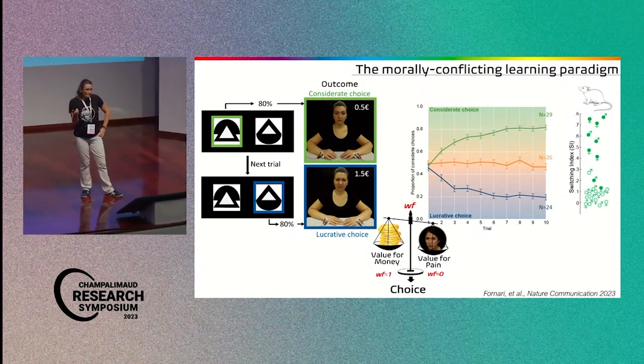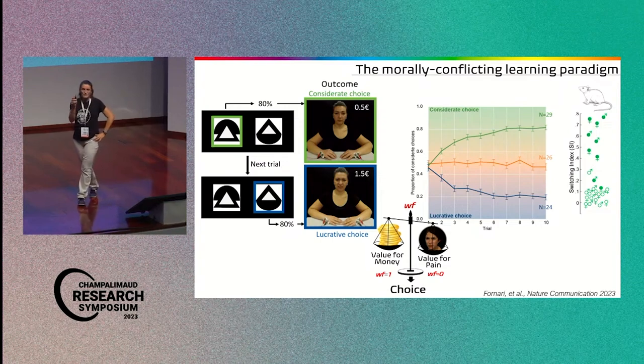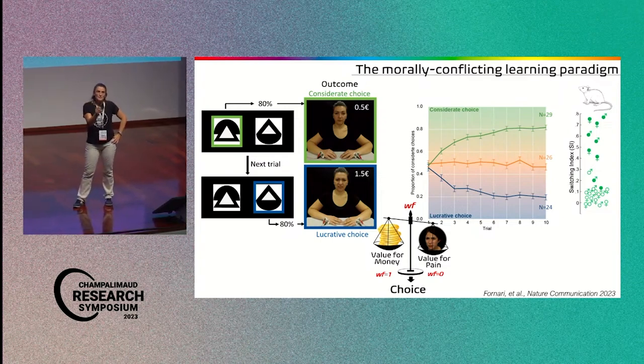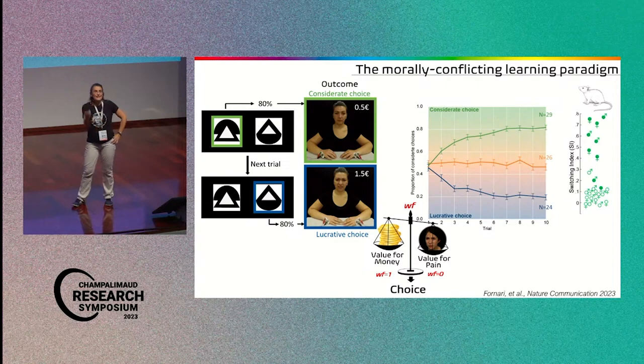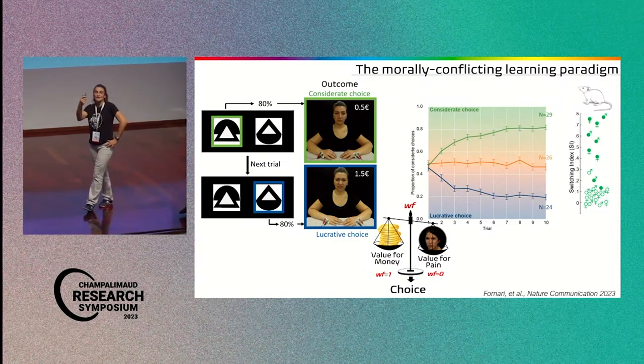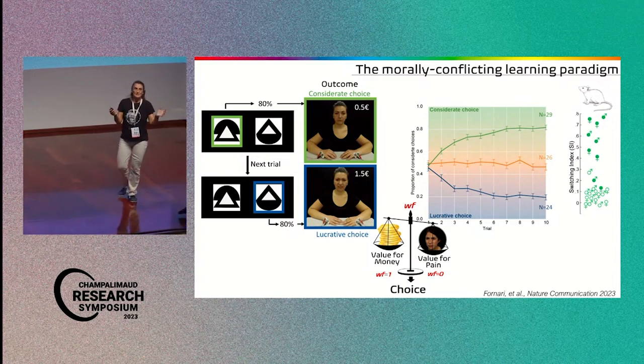And of course, what we are interested in now is trying to understand whether people that choose, for instance, for the lucrative symbol, remain aware that they are hurting the other. Or again, maybe they just learned that they like one symbol or the other.